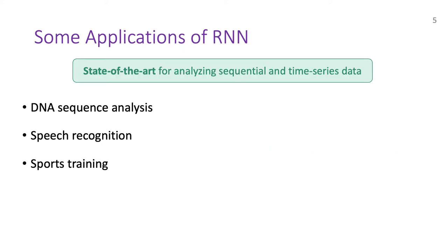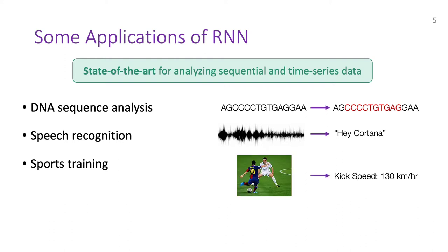RNNs are the state-of-the-art when dealing with sequential and time-series data, and here are some of its applications. First, RNNs are used to analyze DNA sequences. Second, they are widely used in speech recognition. And third, they have also been used in sports training to analyze the performance of athletes. All of these applications work on sensitive data, and realizing them securely requires secure RNN inference.